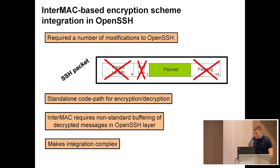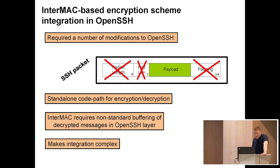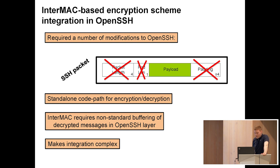Now we have a solid scheme and implementation of InterMAC, and we wanted to see how it performs in SSH. To do that, we implemented InterMAC-based encryption schemes in OpenSSH, which required a number of changes. This is the SSH packet format — it contains a length field, padding length field, and other fields — but most of these become redundant when you use InterMAC. You don't really need them to process packets anymore, so we removed them.